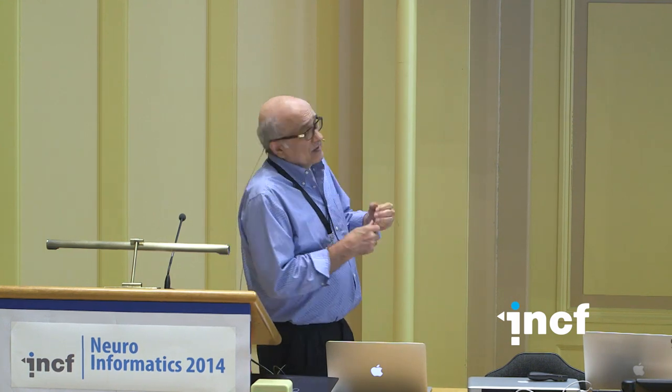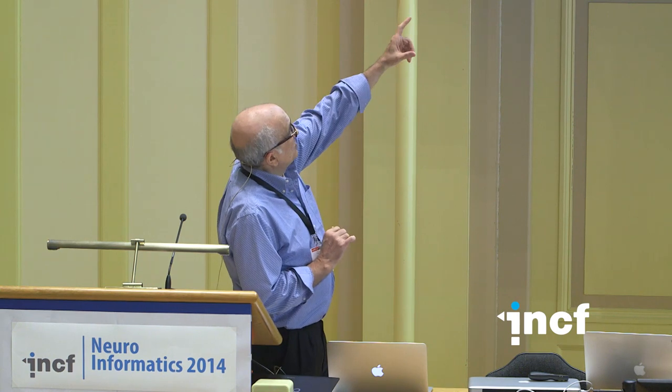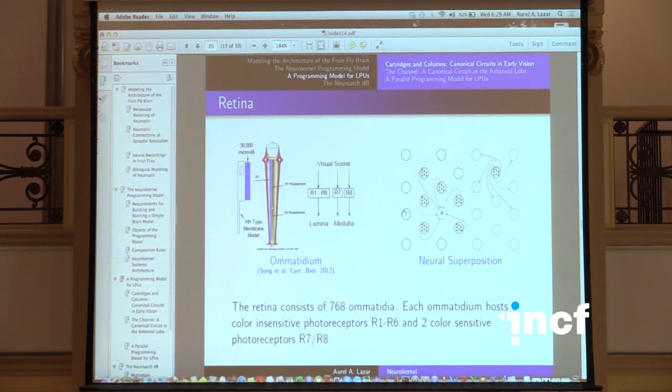In terms of specifics: on the architectural level the issue is to open up interfaces, publish them, and define LPUs any way you want. We started looking into LPUs associated with the vision system and with olfaction. In the vision system there are five LPUs: the retina, then lamina, medulla, lobula, and lobula plate. From a computer engineering standpoint, we need programming abstractions — a flat structure with many neurons is too low-level; we need circuits to manipulate.